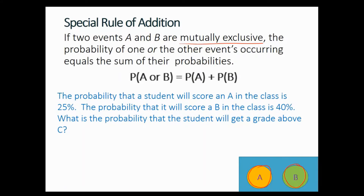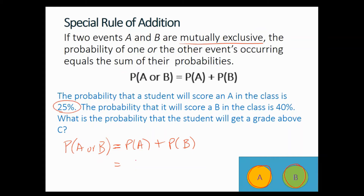Either you get an A or you get a B, but you cannot get an A and a B at the same time. Following the formula, the probability of getting an A or getting a B equals the probability of getting an A plus the probability of getting a B. This is mutually exclusive — you cannot get an A and a B at the same time; you get one or the other.